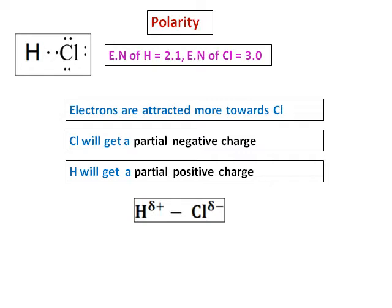Because Cl is more electronegative, Cl gets a partial negative charge and hydrogen gets a partial positive charge. This is written as δ– and δ+. It is not a full positive or negative charge — there is a delta next to it, meaning it is partial. Because of this charge difference due to the difference in electronegativity, we call the bond polar. The element with higher electronegativity gets the larger share of electrons and makes the bond polar — this is a polar covalent bond.